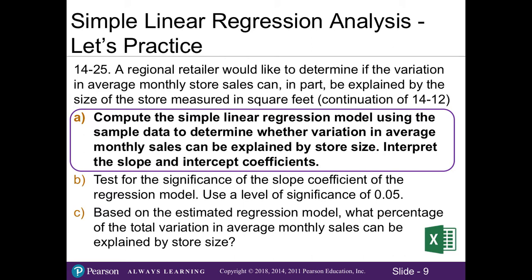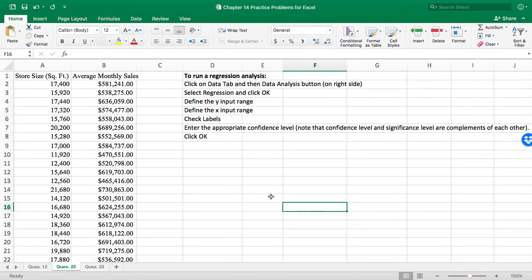Let's do problem 25 for practice. A regional retailer would like to determine if the variation in average monthly store sales can, in part, be explained by the size of the store measured in square feet. This is a continuation of problem 12 from the last video. In part a, we're asked to compute the simple linear regression model using the sample data to determine whether variation in average monthly sales can be explained by store size and interpret the slope and intercept coefficients. It's helpful to scan the other parts - in part B, we'll do a test for significance at a level of 0.05, and in part C we'll work on the percentage of total variation.